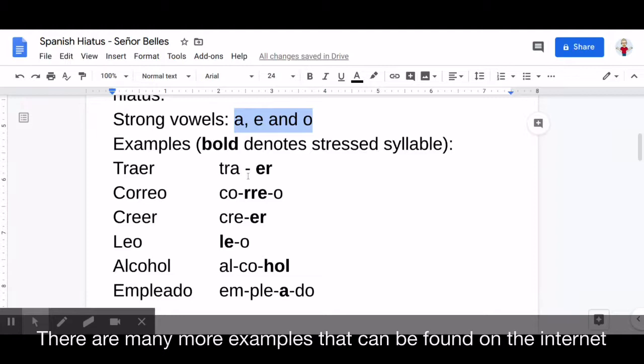This one is correo, the E and the O are separate syllables. Creer, creer. E and O are separate syllables. Leo. Leo. Alcohol. Alcohol. And last one, empleado. Empleado.